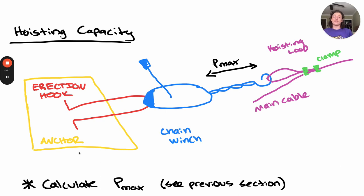We call this value Pmax, and I've drawn a diagram here for the flow of forces. We have our erection hook connected to the anchor, and the chain winch is connected to the erection hook.